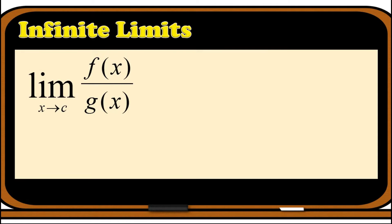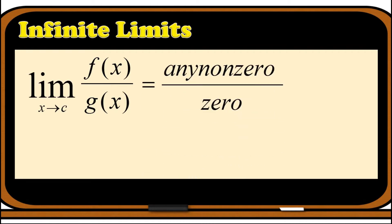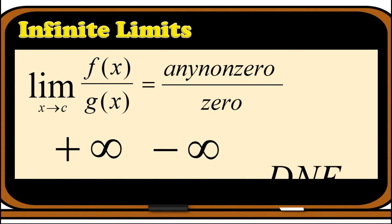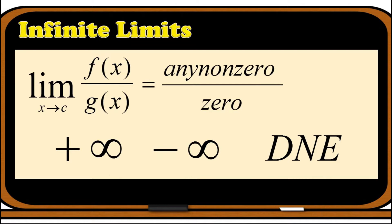Consider the limit of f(x) over g(x) as x approaches c. If this function is already in its simplest form and we evaluate their individual limits, and we get any non-zero limit for the numerator and zero for the denominator, the limit is either positive infinity if f(x) increases without bounds, negative infinity if f(x) decreases without bounds, or does not exist if the one-sided limits approach opposite infinity directions.